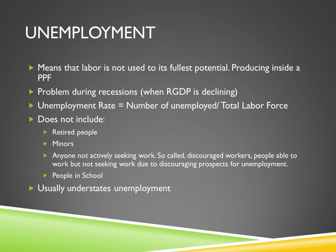Unemployment occurs when people in an economy are not currently working, for any reasons. This means that labor is not used to its fullest potential, and that current production is inside the production possibilities frontier. This is a major problem during recessions, whenever real GDP is declining. Unemployment is calculated with the unemployment rate, which divides the currently unemployed by the total labor force.